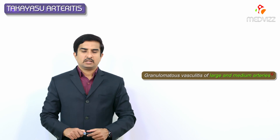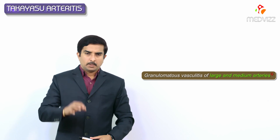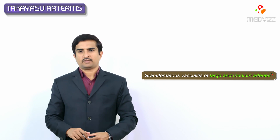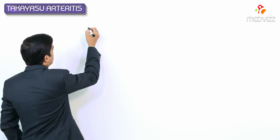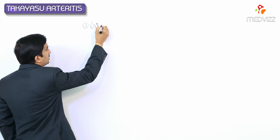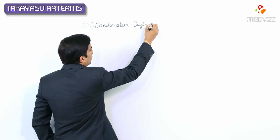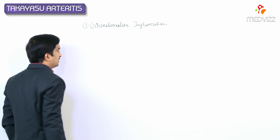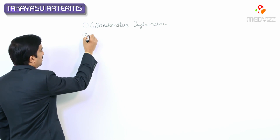Takayasu Arteritis is a large vessel vasculitis with granulomatous inflammation. That is the reason we can also call it as granulomatous vasculitis, principally affecting larger arteries and sometimes also medium-sized arteries. The inflammation is granulomatous inflammation, which is why we call it granulomatous vasculitis. The arteries primarily affected are large arteries.